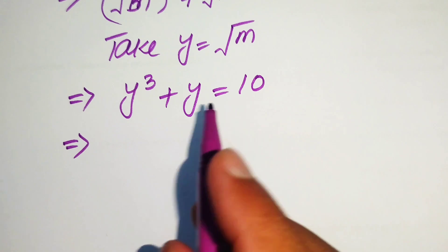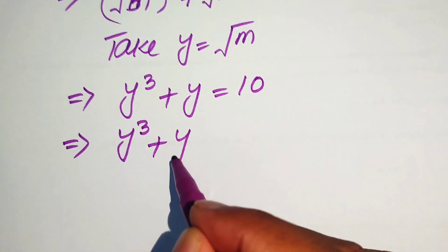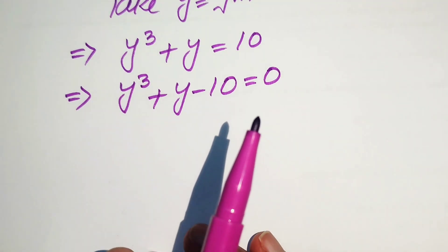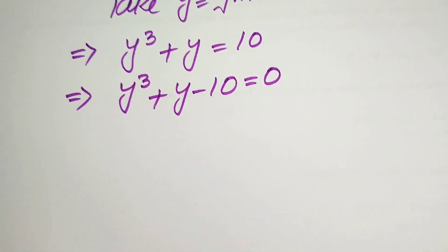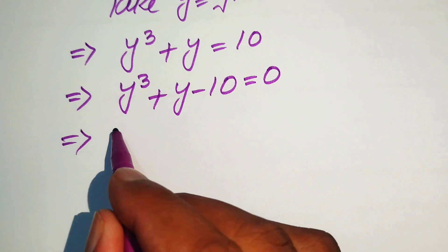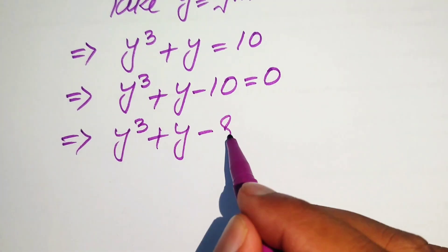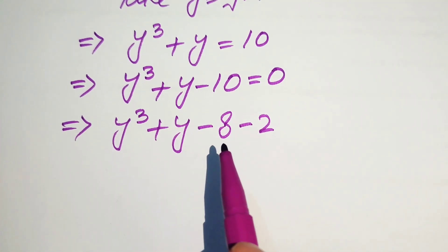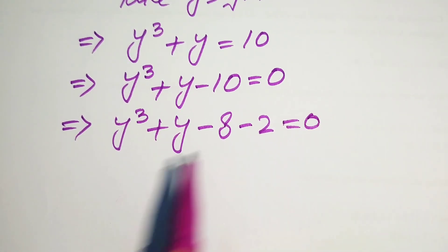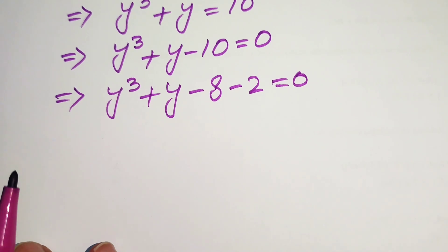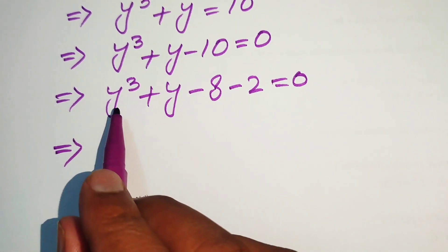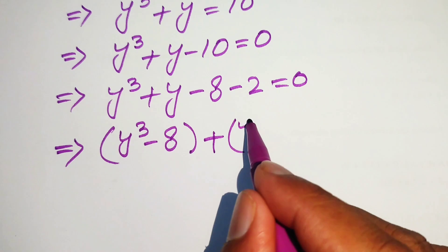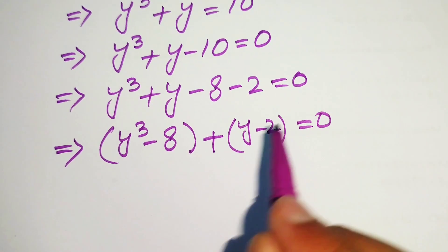We move the 10 to the left-hand side, giving us y cubed plus y minus 10 equals 0. Now we break minus 10 as minus 8 minus 2, since minus 8 minus 2 equals minus 10. We then rearrange the terms, combining y cubed with minus 8, writing it as y cubed minus 8, plus y minus 2, equals 0.